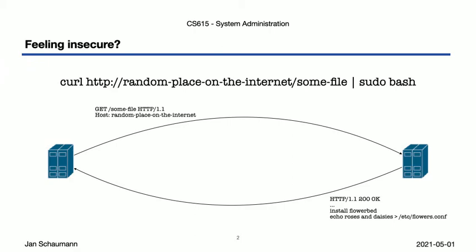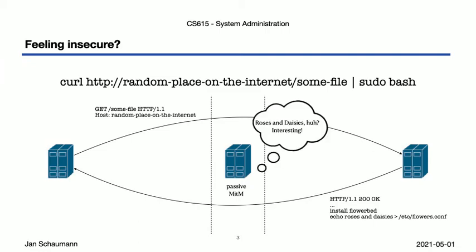Let's start with something terrible that we still see a lot: a trivial curl-pipe pseudo-bash command. This is often criticized as a terrible idea, but just why exactly? On one hand, if we have a passive attacker in the middle, they can observe all the traffic, since everything is being transmitted in the clear. We're using plain HTTP here, and capturing the network packets lets you observe all the data.